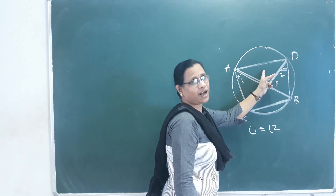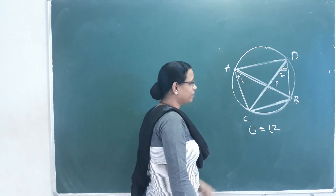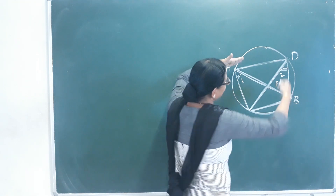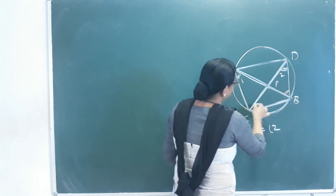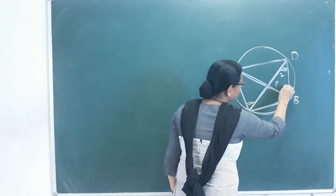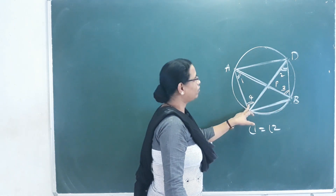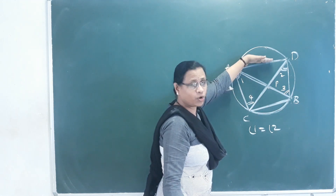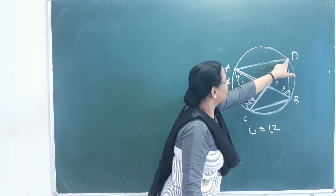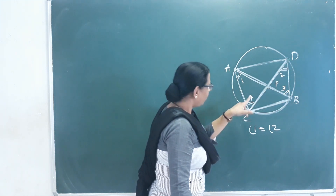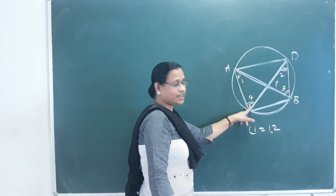Angles in the same segment are equal. In this case, it is equal to angle 2. This chord is called AD. The angle here is equal because AD is the chord. The two angles are equal to the endpoints of the arc. This angle — in this case, the angles in the same segment are equal.